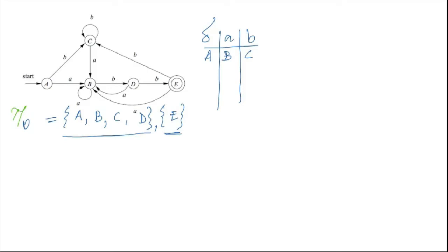Now we are checking between A and B. At state B, if you give A, it has a self-loop on B, and if you give input B, it is leading you to D. Now A and B are not behaving differently — for giving input A, both are leading to B. And for giving input small b, A leads to C and B leads to D, but C and D are members of the same set. So we are not going to split A and B.